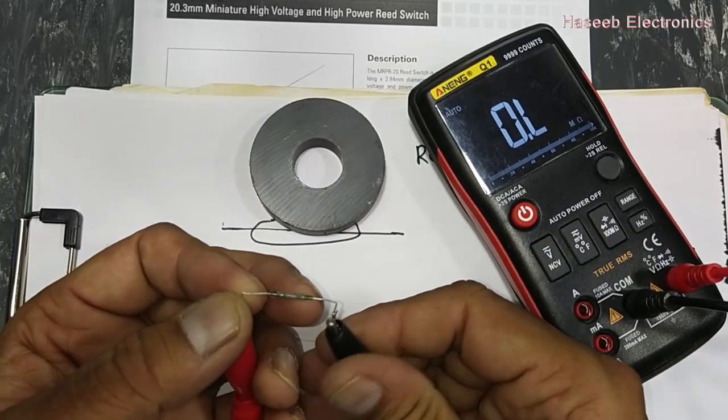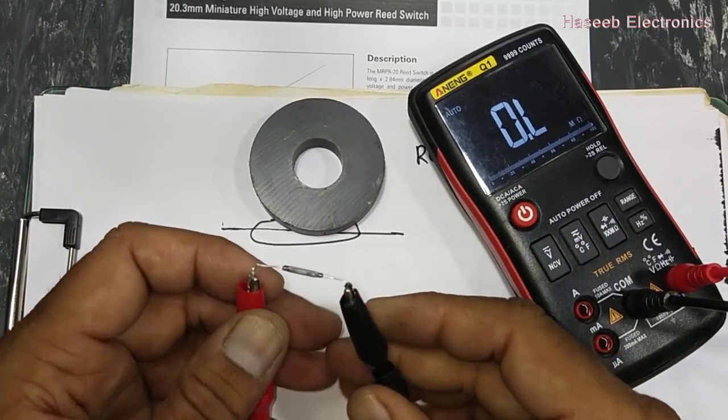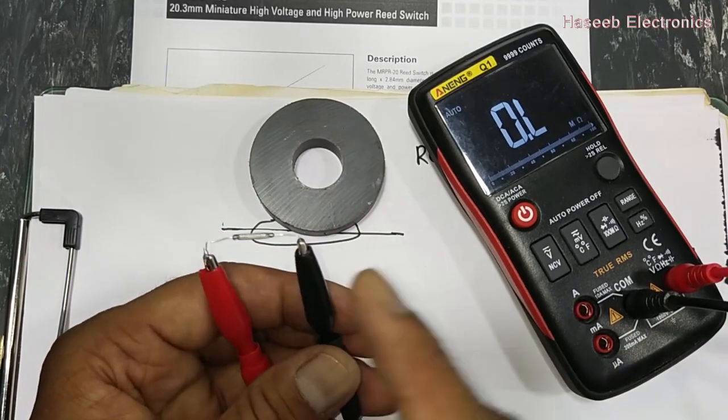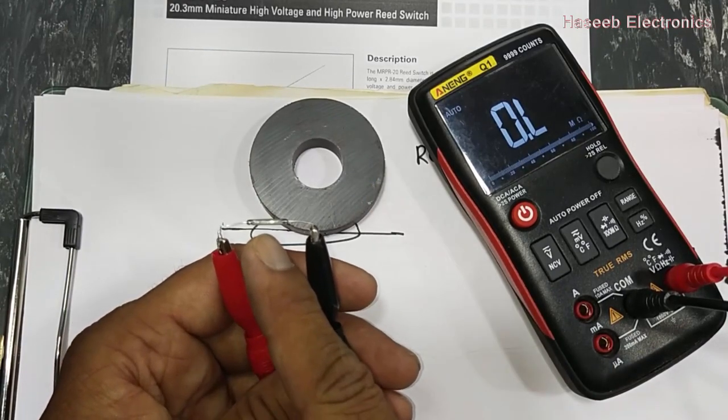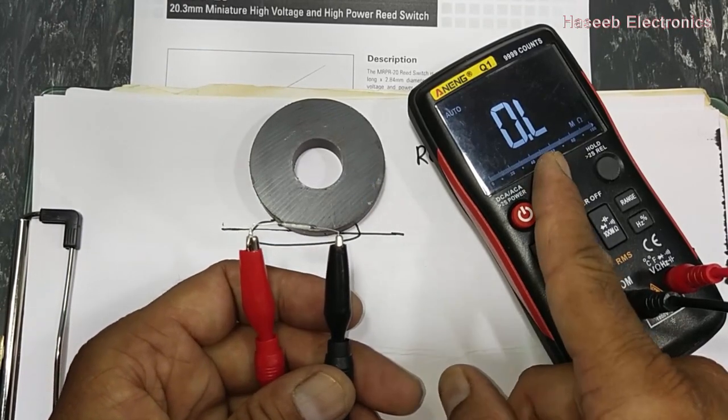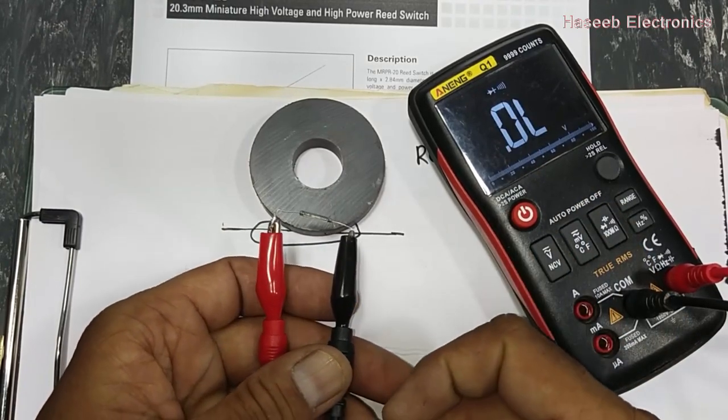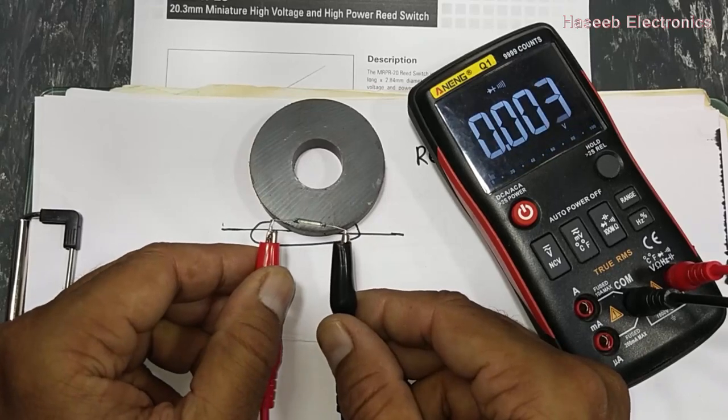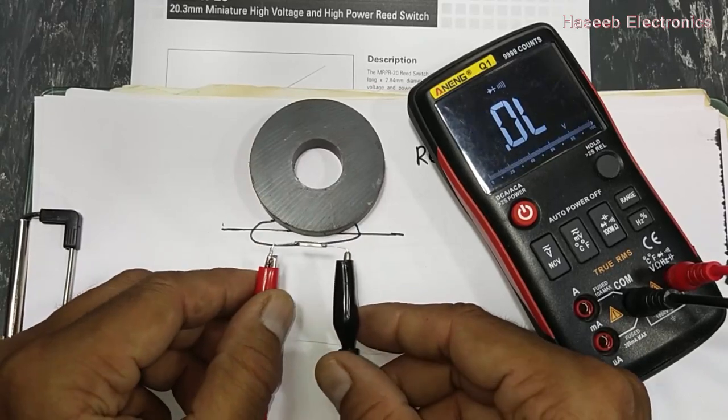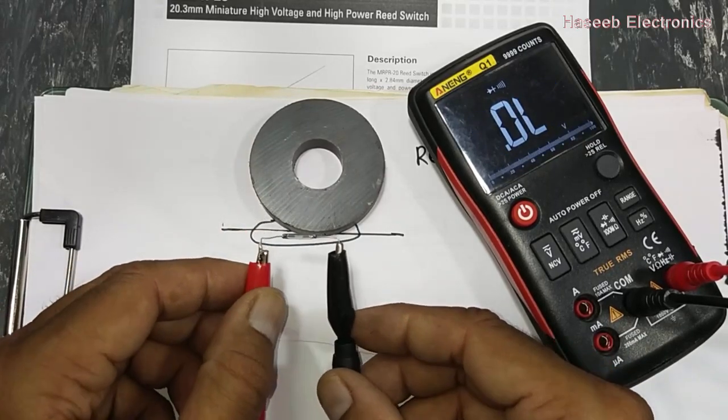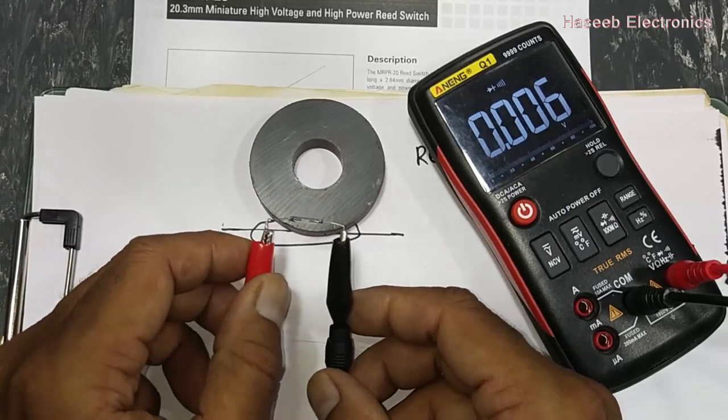There are two types: the one that is normally open, the second normally closed. If it is normally open, we will find open circuit or no continuity. Move close to the magnet, it will give continuity or it will give zero ohm resistance.